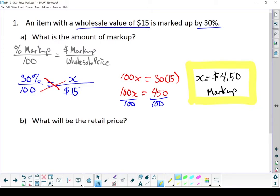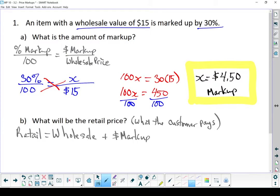So what is the retail price? That retail price is what the customer pays. And our formula is wholesale price plus markup. Wholesale price is $15. Our markup is $4.50. So in this case, our retail price equals, add those two numbers together, we get $19.50. So the store buys it for $15, raises the price 30% or $4.50, and turns around and sells it to the customer for $19.50.